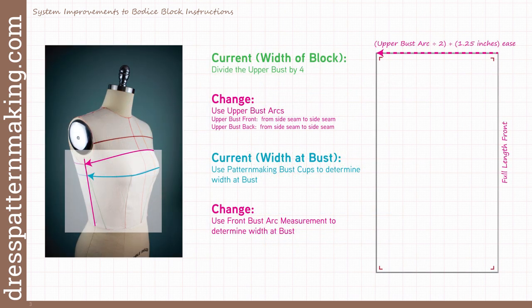Currently my instructions divide the upper bust by four to get the width of the back and front blocks at the upper bust, and then use the pattern making bust cups to work out the width of the block at the bust level. The new system will be based on bust arcs — that includes the upper bust arc and the bust arc.